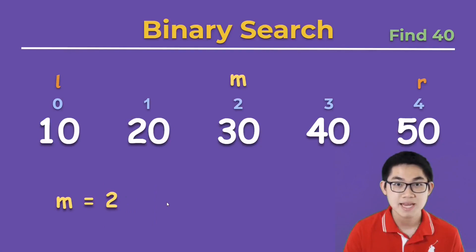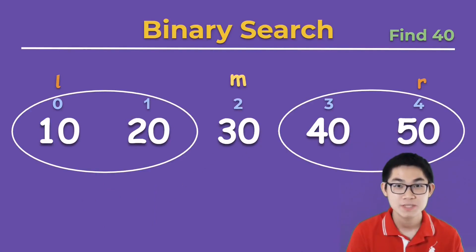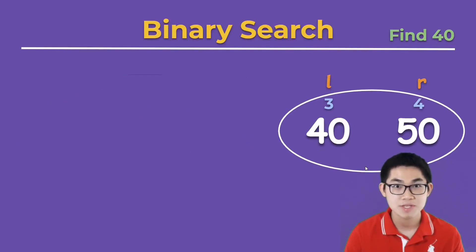So the mid is at index 2. We split the array into two groups. The first step is to check the number at M. We're trying to find number 40 and we see that 40 is larger than 30, so it has to be in the second group. We simply move the left over to the second group, meaning that we choose the second group, and we simply repeat the process.